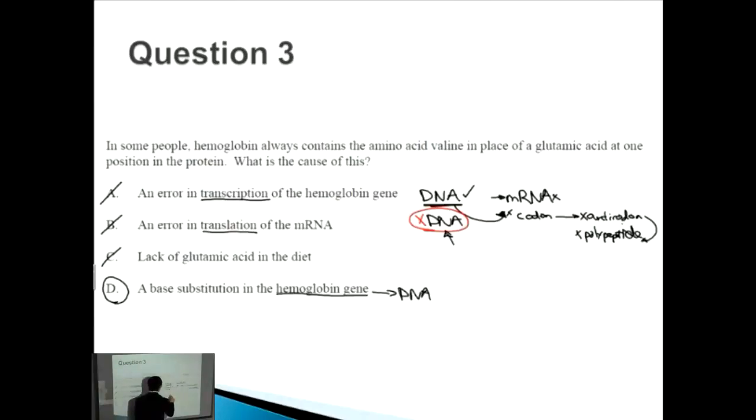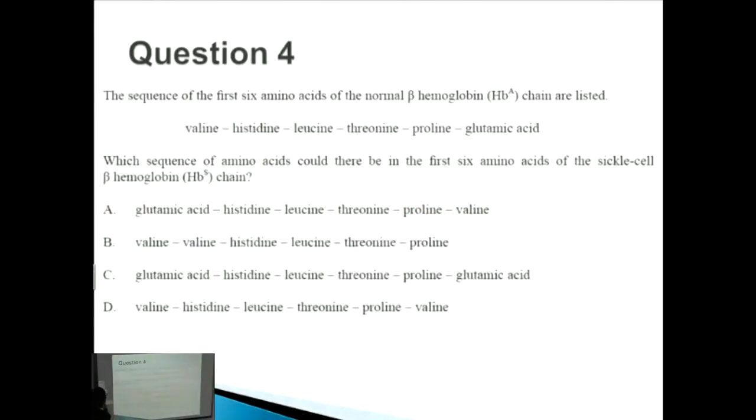Question number four: the sequence of the first six amino acids of the normal beta hemoglobin chain are listed as valine, histidine, leucine, threonine, proline, and glutamic acid. Which sequence of amino acids could there be in the first six amino acids of the sickle cell beta hemoglobin chain? Beta hemoglobin is one of the parts of hemoglobin, an important part of the molecule which belongs in your red blood cells that carries oxygen. With sickle cell anemia, they want to know what kind of change would be in the protein or polypeptide sequence, the sequence of amino acids.